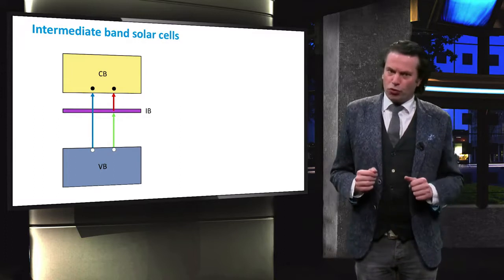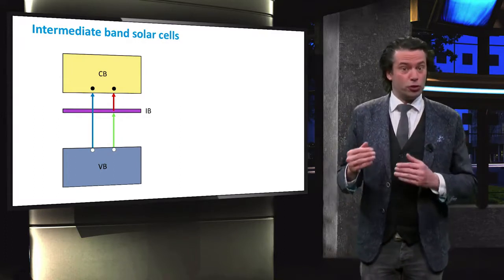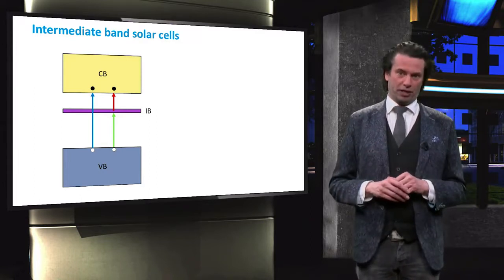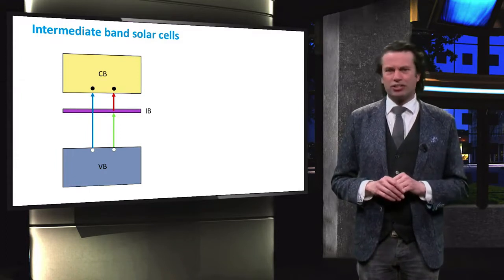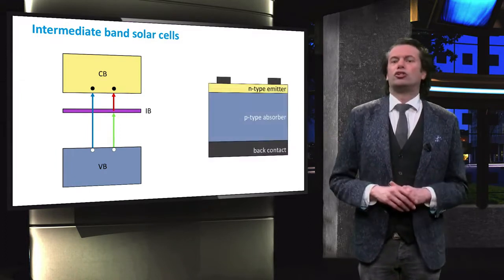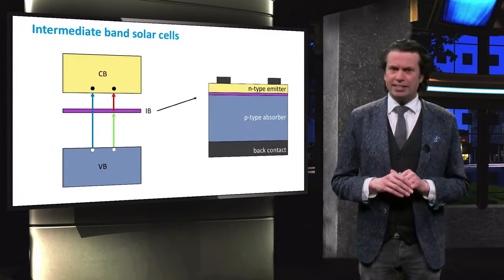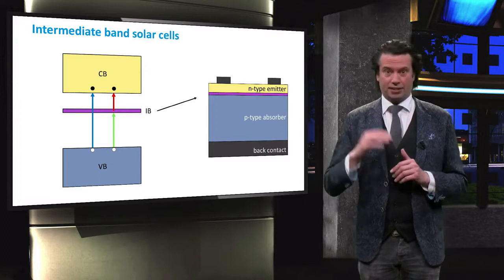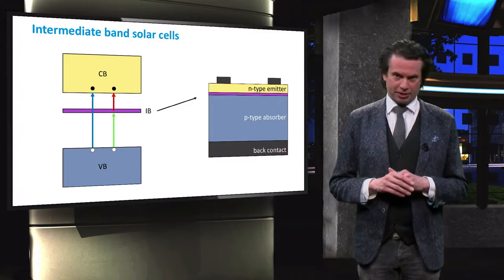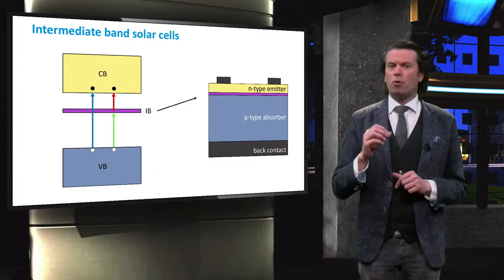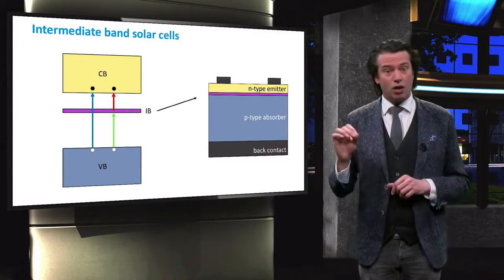The absorption of two photons with energies smaller than the bandgap energy can therefore result in the generation of an electron-hole pair. Realizing intermediate bands is not an easy feat. In such solar cells, a layer with the intermediate states is placed in between the P and N layers. Various bulk materials have been studied for realizing the intermediate states. One major problem of these cells is that the voltages are lower than those of the reference cells without an intermediate band structure.